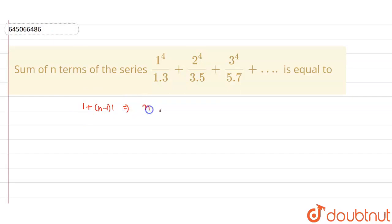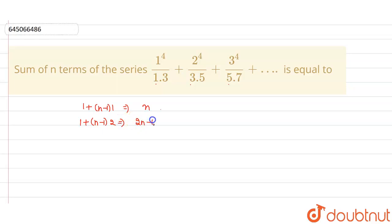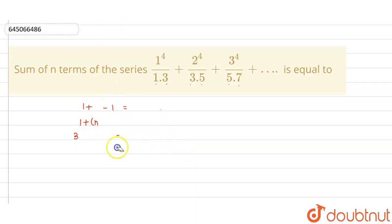So we can write the numerator's nth term as n to the power 4. In the denominator, we have 1, 3, which also forms an AP with common difference 2, so we can write it as 2n − 1. And 3, 5, 7 also forms an AP with common difference 2, so we can write it as 2n + 1. Therefore, the Tₙ term will be n⁴ / ((2n − 1)(2n + 1)).